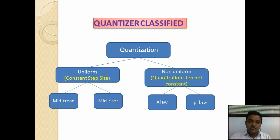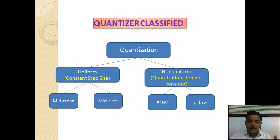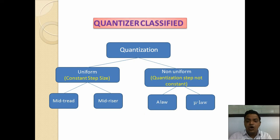Uniform quantization is further subdivided into two parts: mid-tread quantization and mid-riser quantization. In mid-riser, the amplitude is considered, and in mid-tread, the step size changes with respect to time duration on the x-axis. Non-uniform quantization uses A-law and mu-law, which depend upon the companding technique — that is, compression of the signal at the input side and expansion at the output side, called companding.